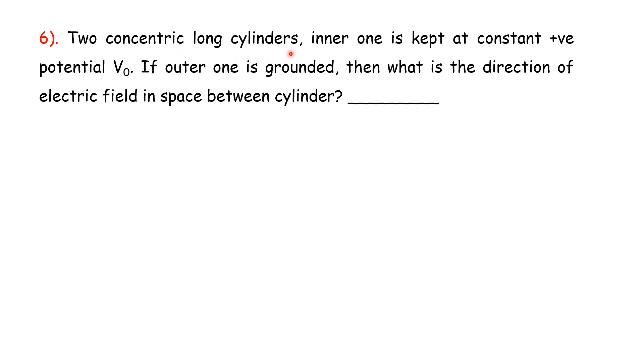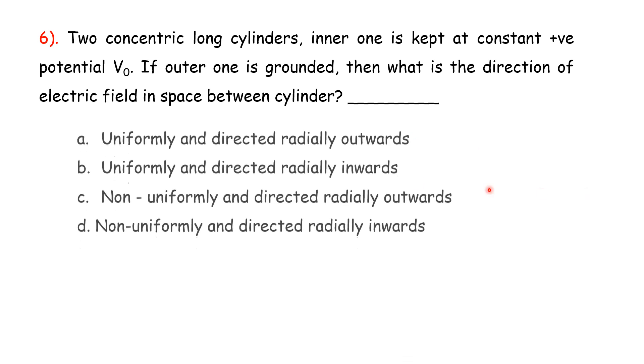Two concentric long cylinders, inner one is kept at constant positive potential V naught. If outer one is grounded, then what is the direction of electric field in space between cylinders?